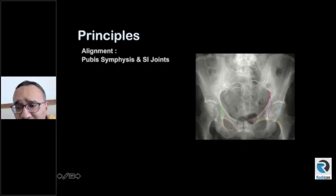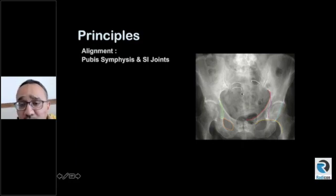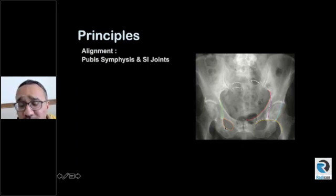Then there is the red line, which is the iliopectineal line. You have the purple line — the ilioischial line — you have the acetabular walls, and then don't forget the white lines at the back outlining the sacral hiatus and the sacral foramina. These are called arcuate lines. Then there is the teardrop, and you can also draw the margins of the obturator foramen.